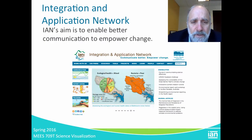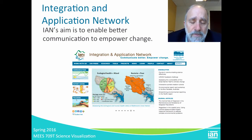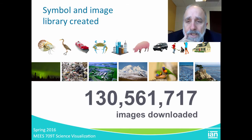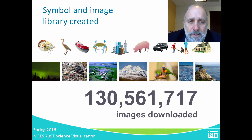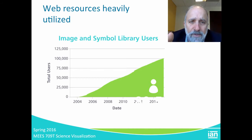When I came back from Australia to set up the Integration and Application Network, we really pushed the idea of developing a web presence so we could share these skills and include training materials for other people to develop better science communication. We created a symbol and image library, which has proven to be very popular both in the number of users and the number of images and symbols downloaded. These symbols were all hand-drawn by science communicators for particular uses, and we now have 100,000-plus image and symbol library users who have registered and downloaded those.